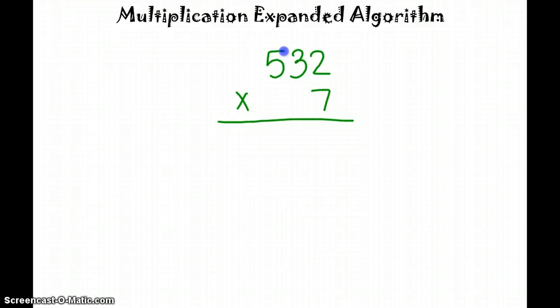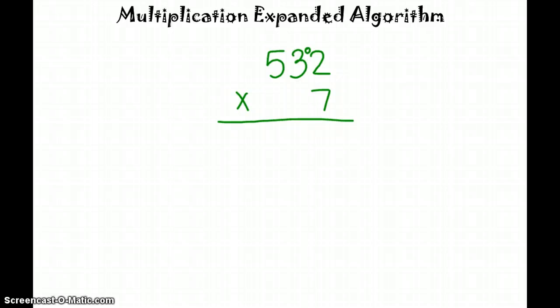So we want to see if we have 532 groups of 7, we want to know what our total is. Our first step is to set up our problem. A little trick I tell my students is to remember that the 3 is in the tens place, so we're going to put a little zero there to remind ourselves that its value is 30. Now the 5 is in the hundreds place, so we're going to put two zeros back there to remind ourselves that the value is 500.